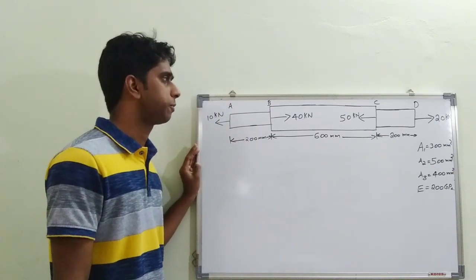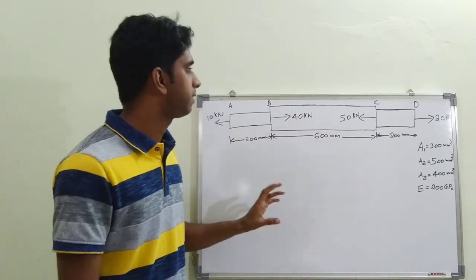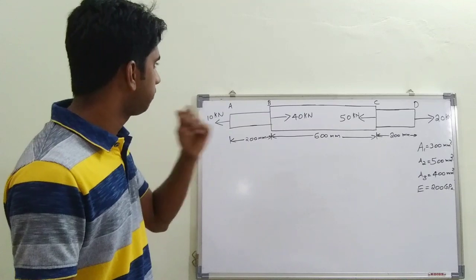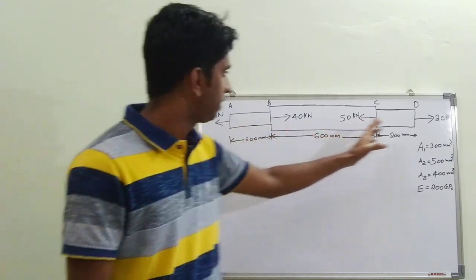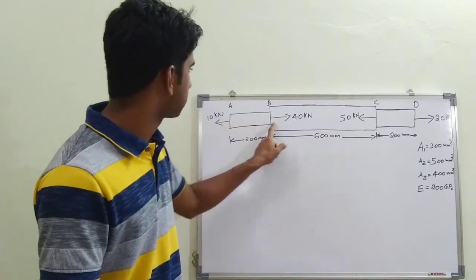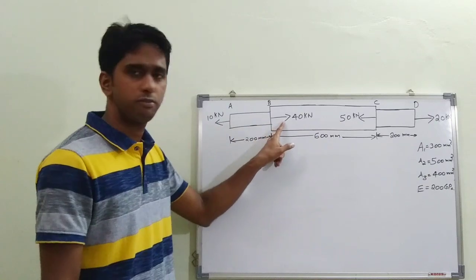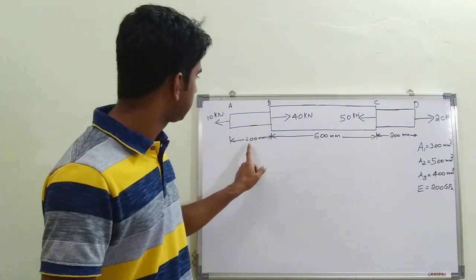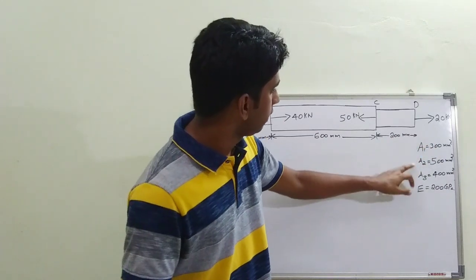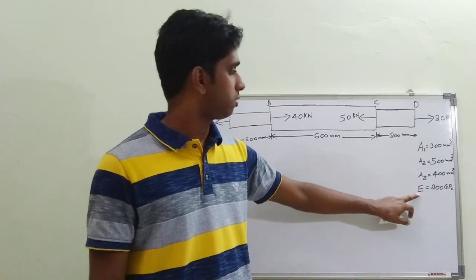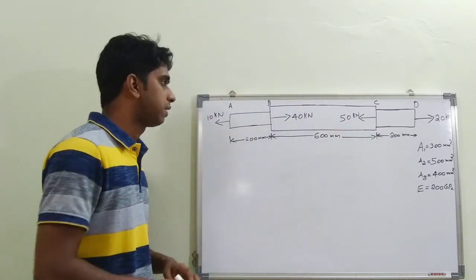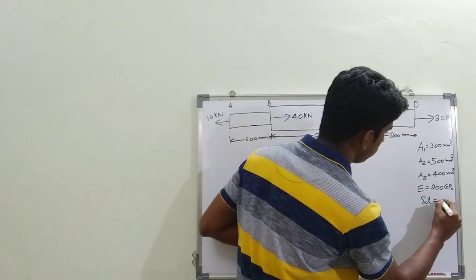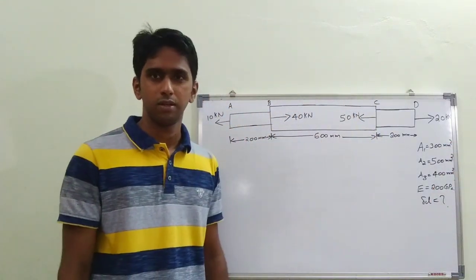Today we are going to work out a simple problem based on the Principle of Superposition. First, you have to clearly understand the question before working it out. Here we have a varying cross-section shaft subjected to loads at different sections. There is a 10 kN load, a 40 kN load, a 50 kN load, and a 20 kN load. Each section's length is given — 200, 600, 200 — and their areas and the material's Young's modulus are also given. We are asked to find the total deformation.